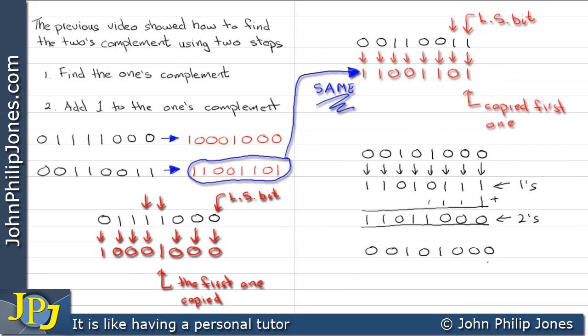Now let's use the quick method. What we do here is we copy down, as you can see. I'm copying the 0s down. And now I'm copying my first 1. There's the first 1 actually copied down.